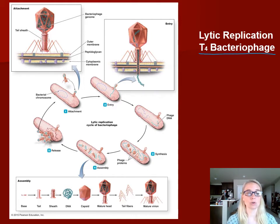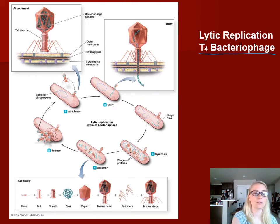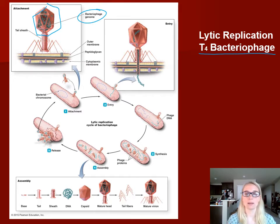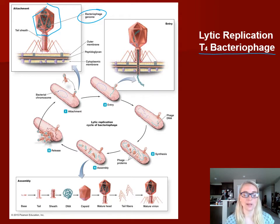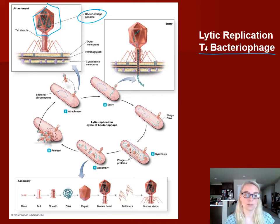Looking at its structure, a virus has those two component parts: its capsid and its genome — the DNA. These are double-stranded DNA viruses. But the bells and whistles for the bacteriophage include the tail sheath, the tail fibers, the base plate, and those all play a part in recognition of their host cell.